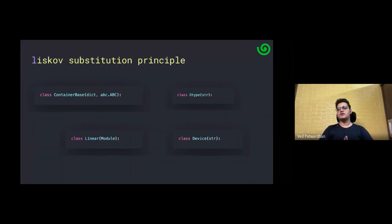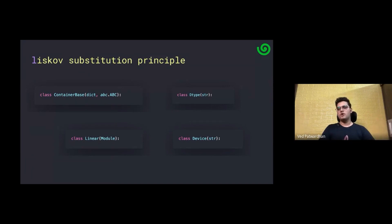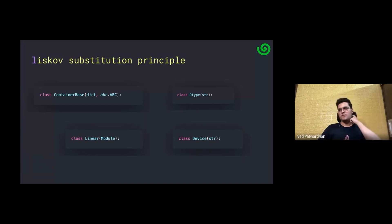The Liskov Substitution Principle: if you're writing code that makes use of a superclass, using a subclass should be a drop-in replacement. For example, if you have code that should work with an `IvyModule`, that same code should just easily work with a `Linear` layer as well, because the `Linear` layer is a subclass of `IvyModule`. This makes the code much more usable — you write your code to be compatible with `IvyModule`, and as a result any subclass, such as `Linear`, will also be compatible with whatever code you're writing.